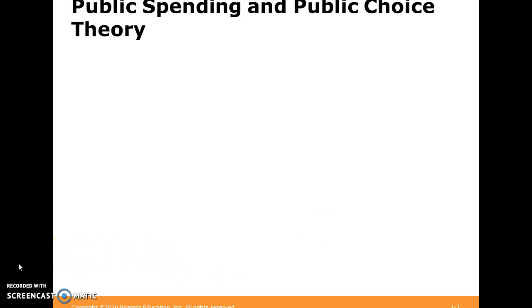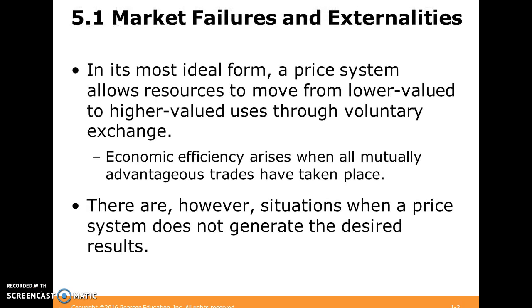Welcome back everyone. In this video we're going to talk a little bit about public spending and public choice theory. In its most ideal form, the price system — like we talked about last video — allocates resources from lower valued to higher valued uses through voluntary exchange and price mechanisms. In its ideal form, it is economically efficient and mutually advantageous between the parties involved in trade.